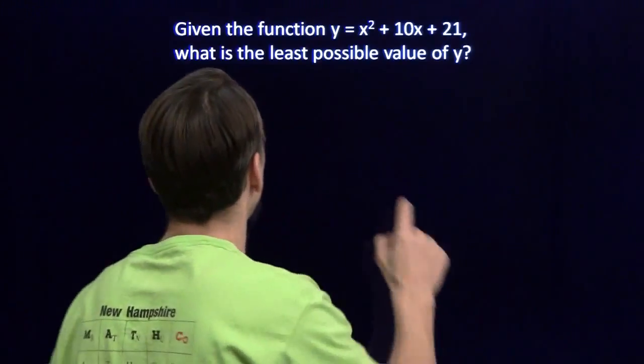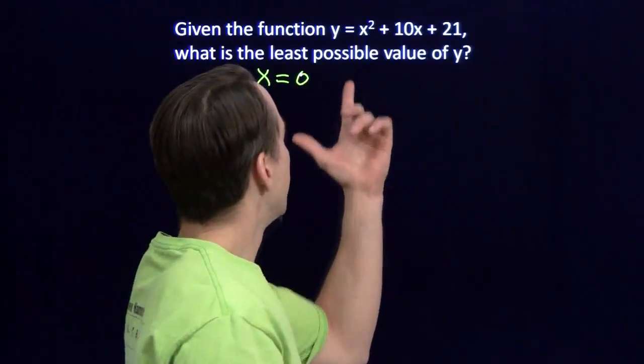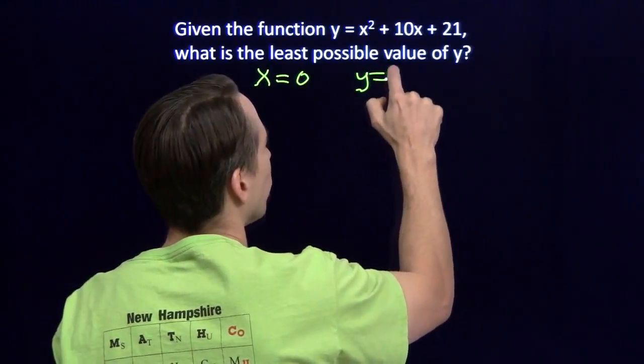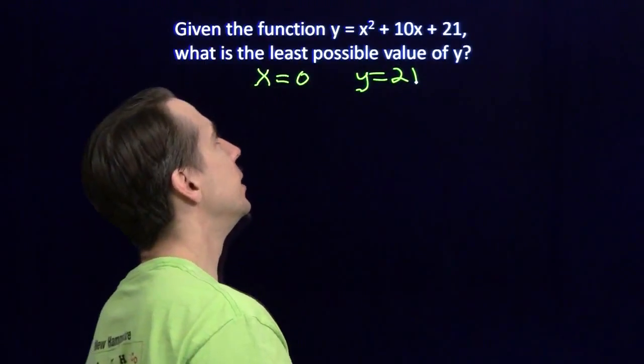I'll just start with the least possible value of x. That's easy. Put in x equals 0. 0 squared is 0, plus 0, plus 21. That gives me y equals 21. What's that? Oh, yeah, negatives.